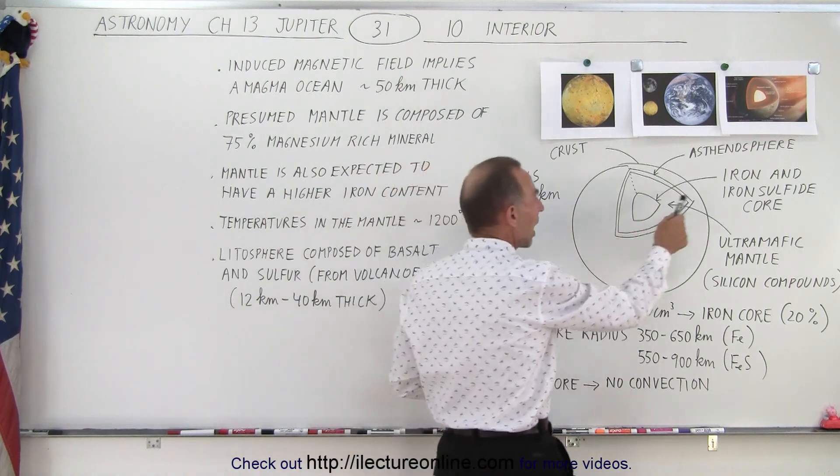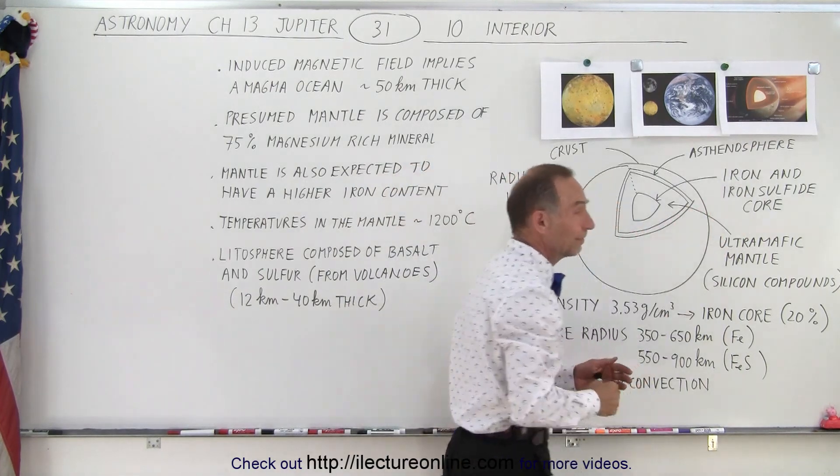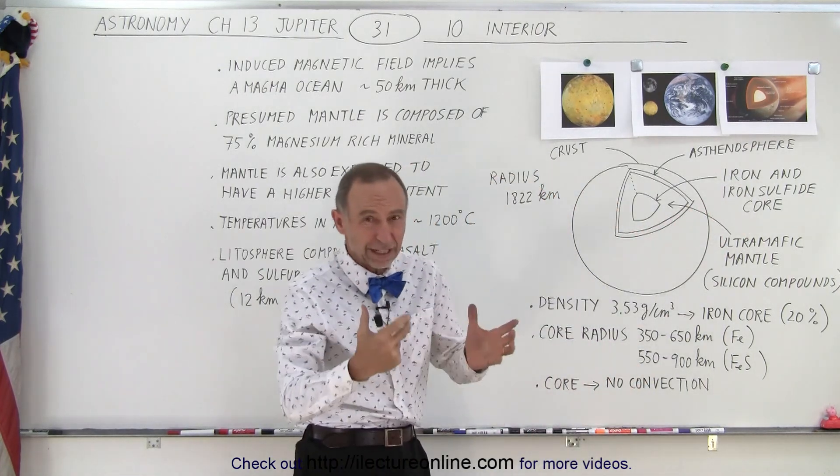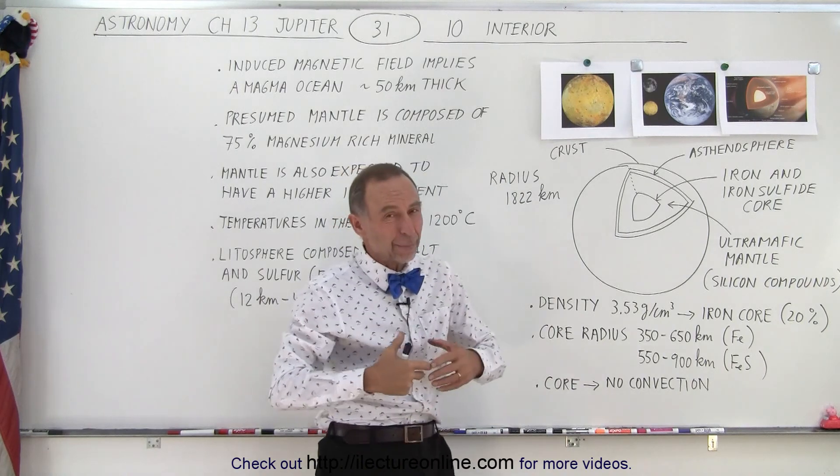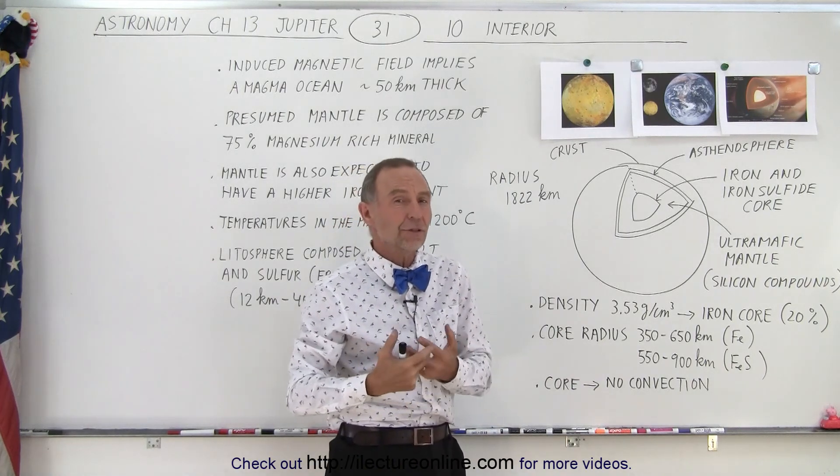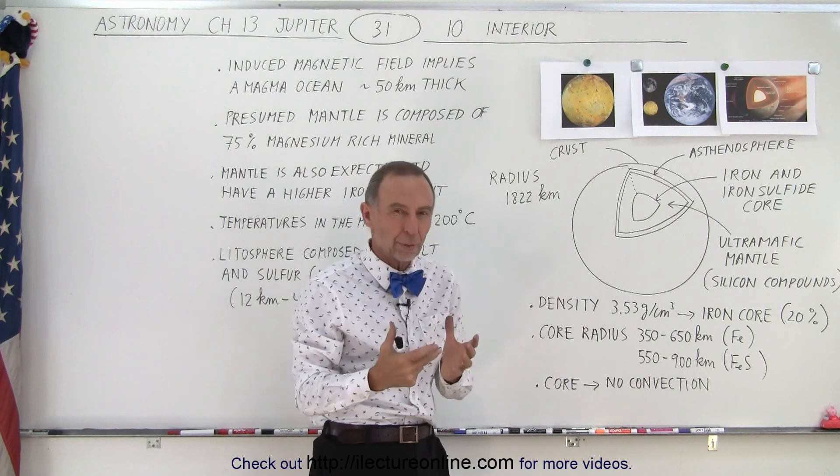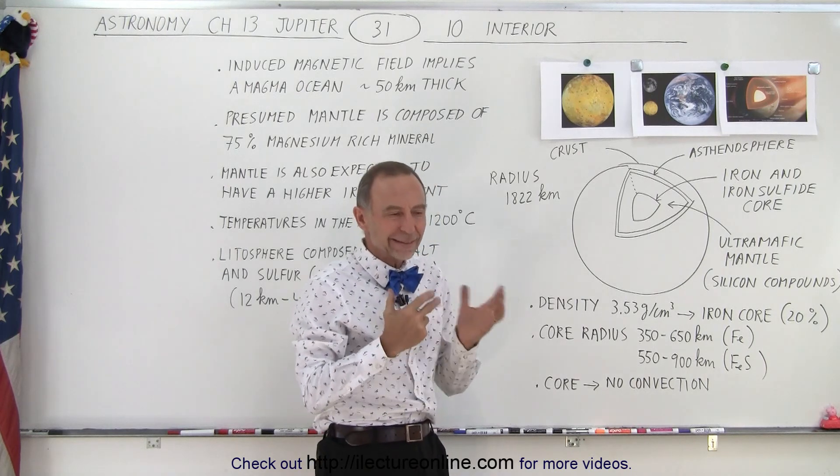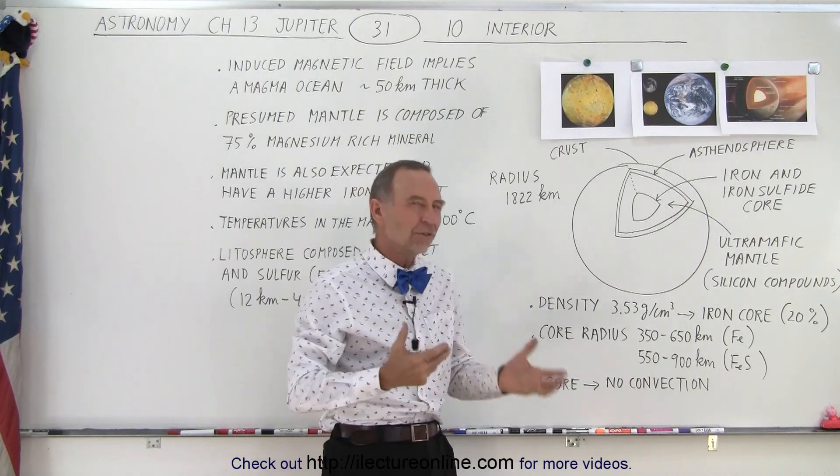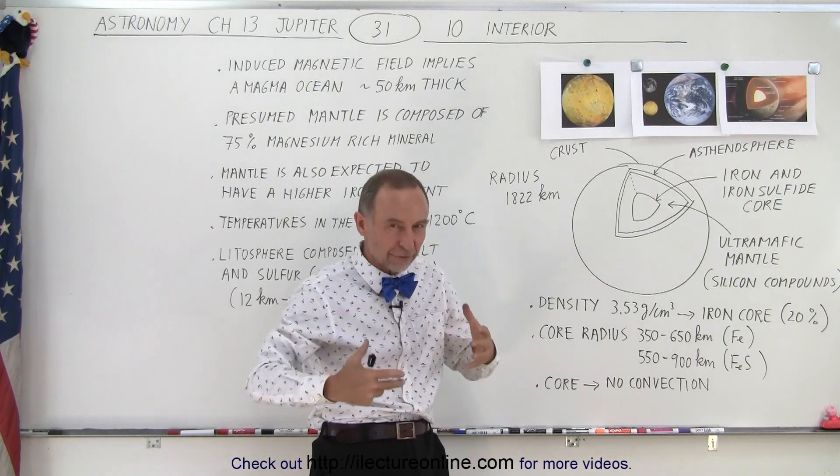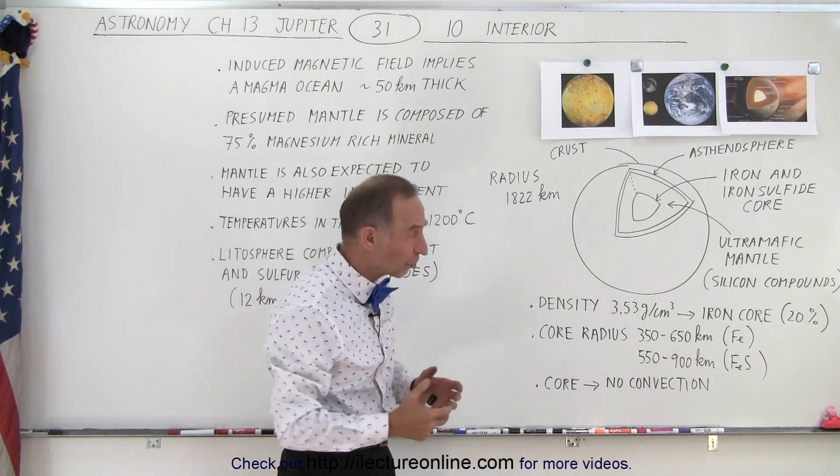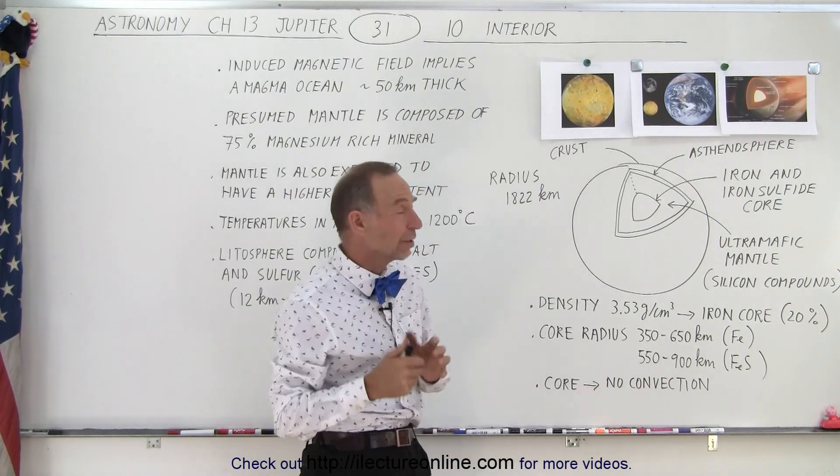The core is made up of either iron or iron sulfide. Obviously we can't go in there and check it out. Whenever we talk about the interior of a planet or the interior of a moon, there's a lot of guesswork involved. But it's intelligent guesswork based upon observations, measurements, and conclusions - this is what we think is going on.